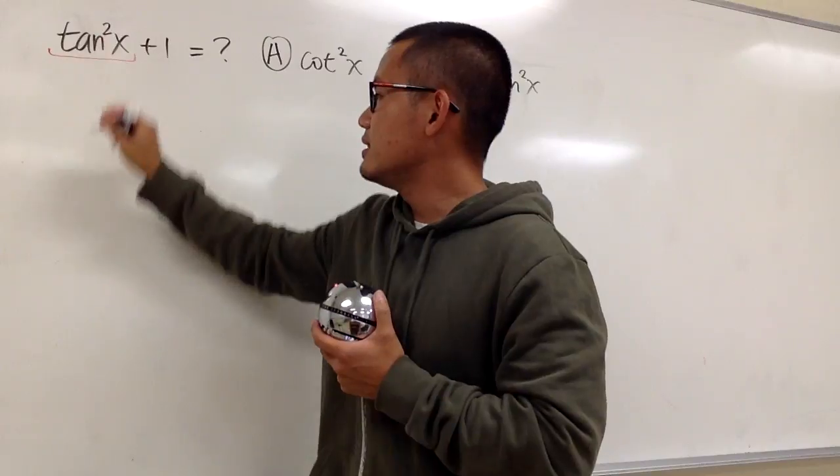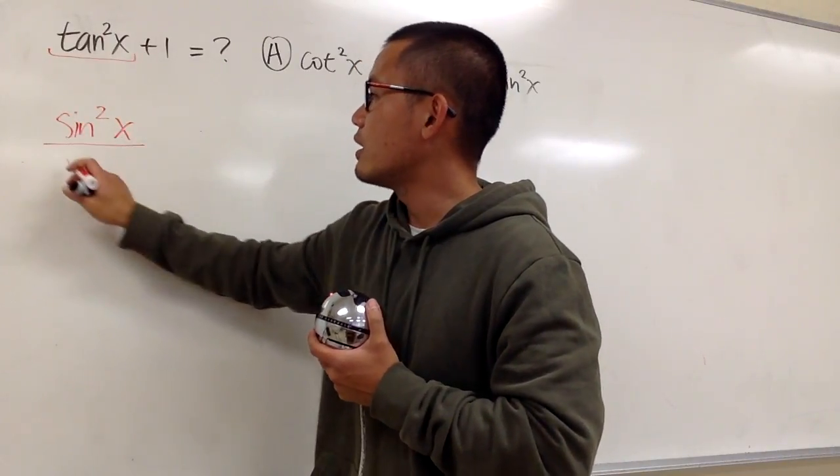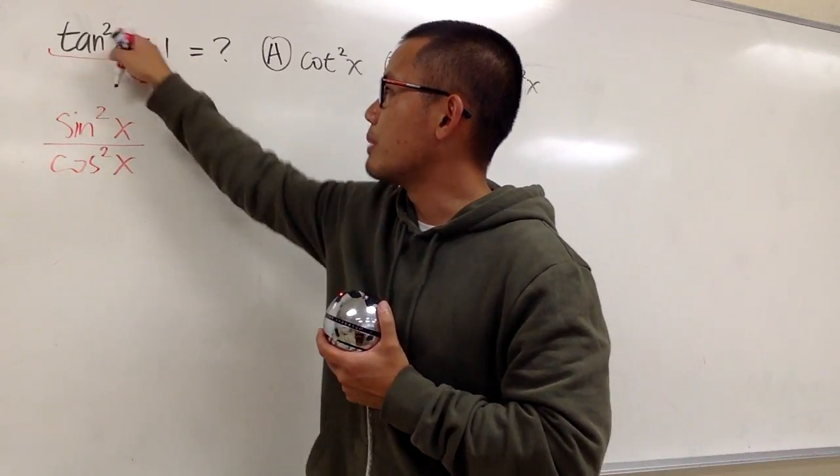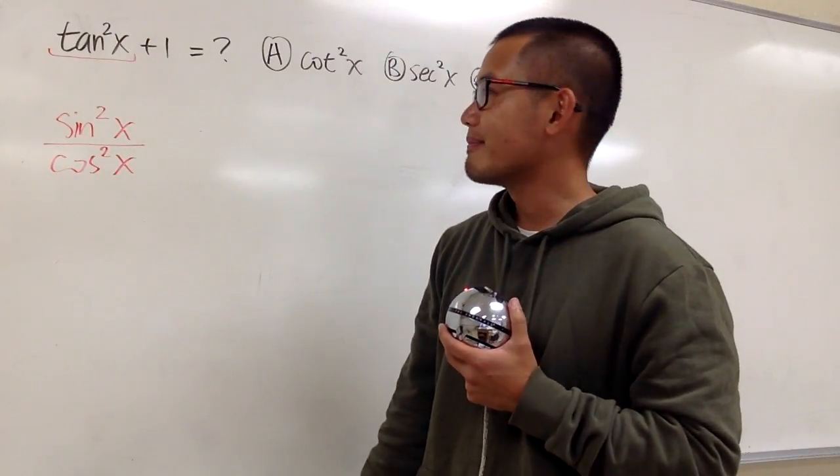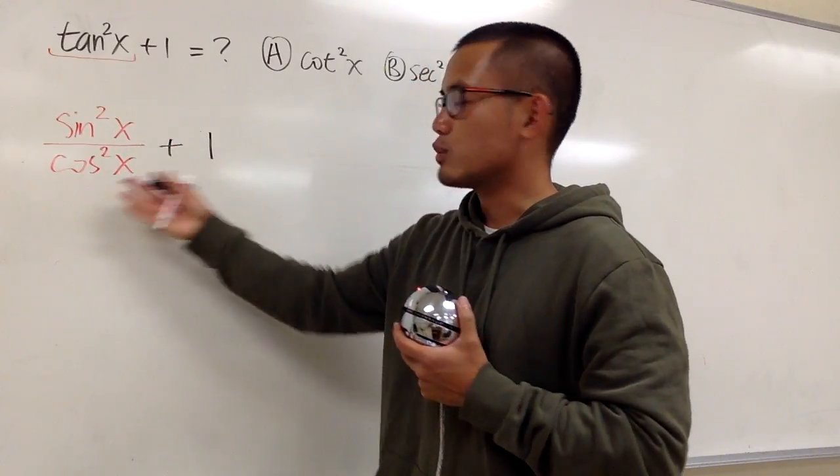For the tan²x, this is the same as sin²x over cos²x. And once again, the power, power, power, they have to match, all right? And we still have the plus 1 right here, and this is what we have.